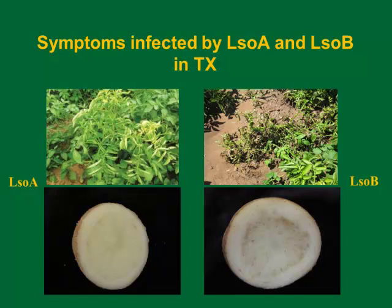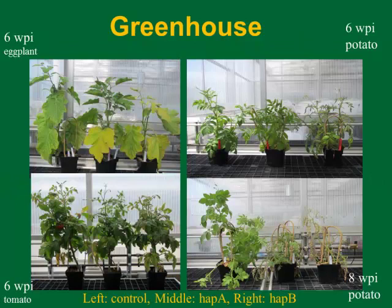Those typings were done later on — we have a lot of archived samples. In our greenhouse trial last year, we used eggplant, tomato, and potato. Just to let you know: in each picture, the left plant is the control, the middle is infected by haplotype A, and the right is infected by haplotype B. Six weeks after infection, the healthy one looks pretty healthy, and both infected ones are stunted. The B seems more severe — yellower and more stunted. On the tomato, a similar phenomenon was observed, with symptoms appearing more purplish.